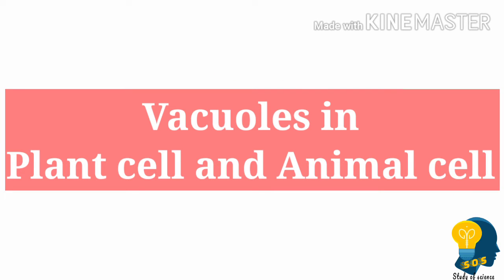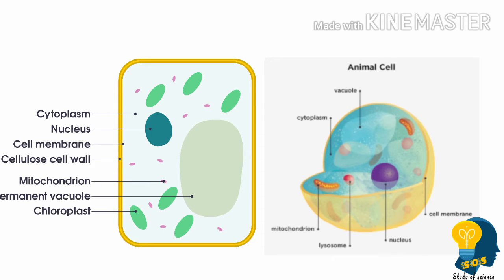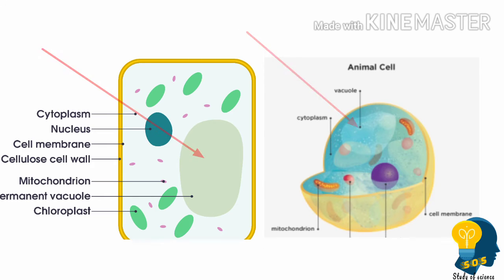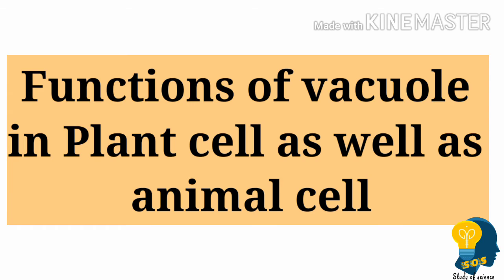Now let's understand the difference in vacuoles between plant cells and animal cells. Vacuoles are present in both plant cells and animal cells. In the plant cell, the vacuole size is very large, but in the animal cell it is small — sometimes it is not present, and its presence depends on whether the cell requires it.